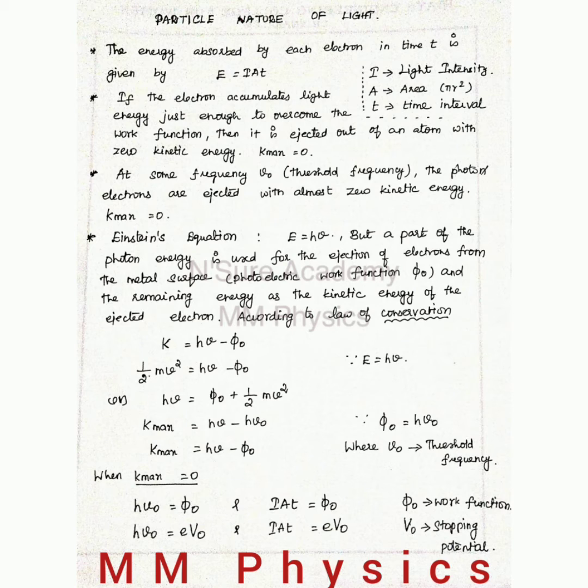The energy absorbed by each electron in time t is given by E = IAt or E = hν, where I is light intensity or power, A is area, and t is the time interval.